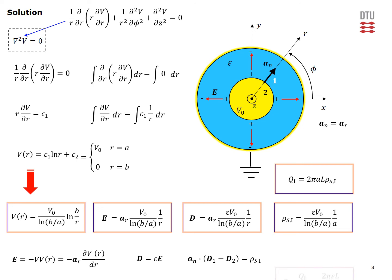Since this surface charge is uniformly distributed, multiplying by the surface area of the inner conductor, 2πAL, gives the total charge in Coulombs induced on the inner conductor. Dividing this total charge by the assumed potential difference yields the capacitance of the coaxial cable. This is the same result as derived in video problem 6, but here we started from the assumed potential difference and worked our way to the derived capacitance, completing the solution using the Laplace equation.